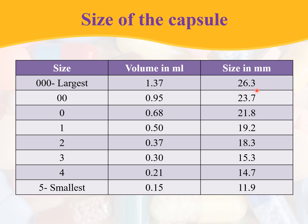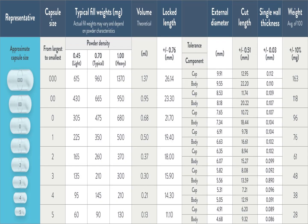The largest capsule size for human consumption is 2.63 cm or 26.3 mm. Here you can see the tabular list of various parameters that must be considered before selecting a capsule size. The first column indicates a representative visual of the capsule sizes, with triple 0 being the largest and size 5 being the smallest.